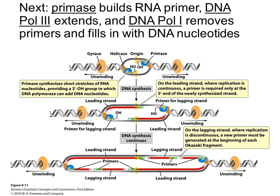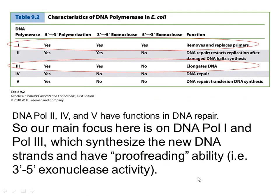An enzyme called primase can lay down the first nucleotide to start the new strand, but primase can only build RNA. So primase lays down a few nucleotides of RNA in a little chain — the RNA primer shown in green. Then DNA polymerase 3 adds onto the 3' end of that primer and continues building DNA shown in red. On each replication fork, one strand is the leading strand built in the direction of unwinding, and the other is the lagging strand built in smaller discontinuous pieces.